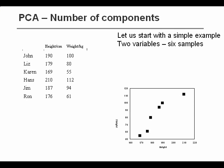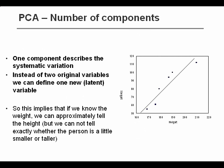Let's take a simple example. Here we have six different objects and two different variables. The two variables are rather correlated, so we can actually determine at least one component — one direction where the data are very correlated. They mainly spread on the line shown in the plot to the right. That means that instead of two original variables, height and weight, we can do with one variable looking at the projection of each object onto the line. We could call this new latent variable 'size,' and the weight and height are just two manifest variables depending on the underlying latent variable.